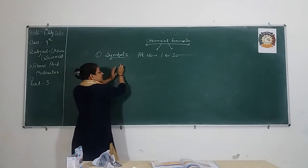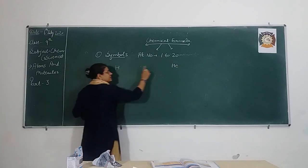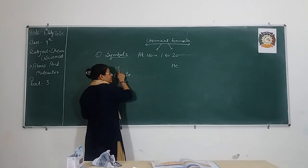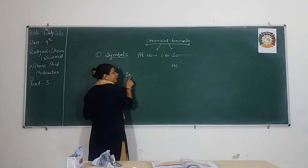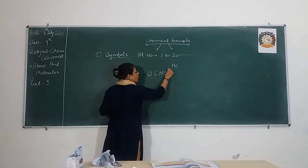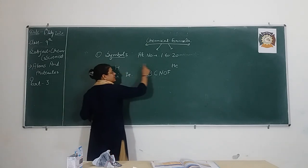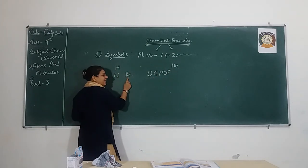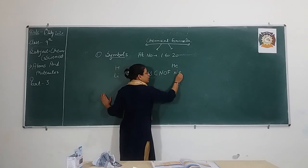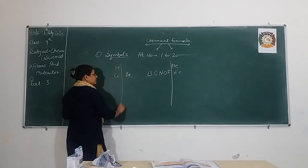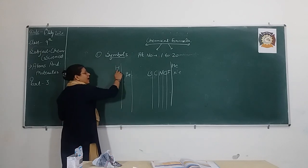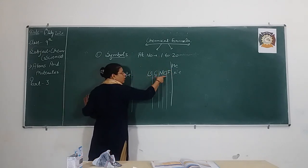The easiest method is to remember them in sequence. Hydrogen, helium, lithium, beryllium — then there is a short form: BaCNoF — meaning boron, carbon, nitrogen, oxygen, fluorine, neon. So the first ten are: hydrogen, helium, lithium, beryllium, boron, carbon, nitrogen, oxygen, fluorine, neon.